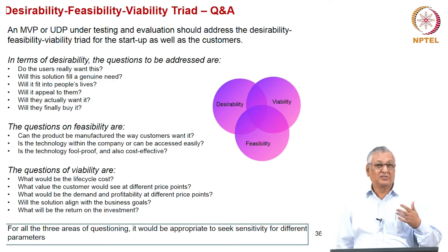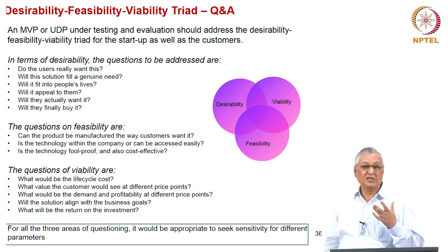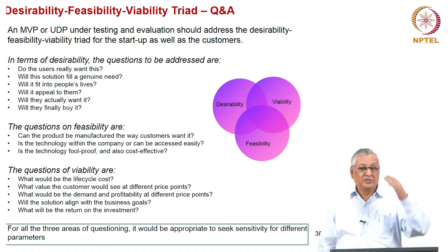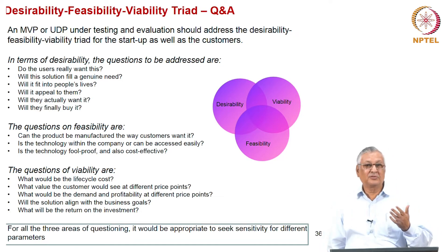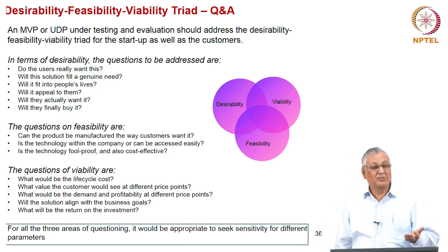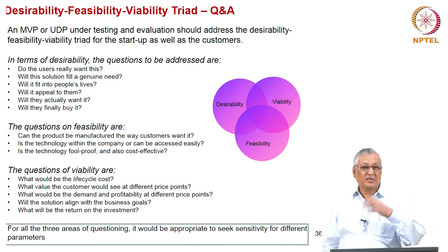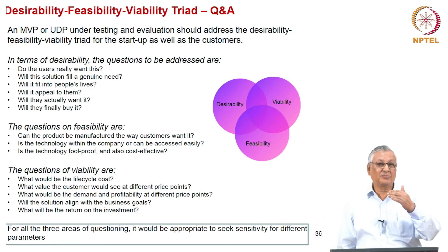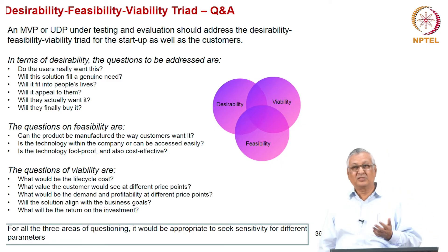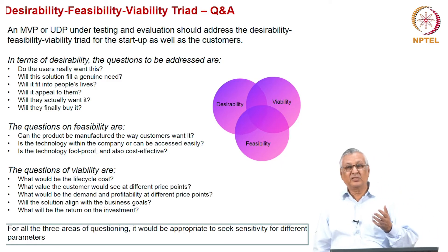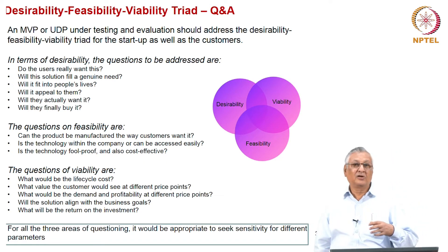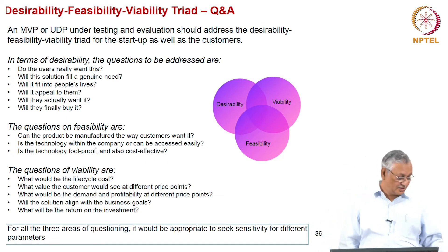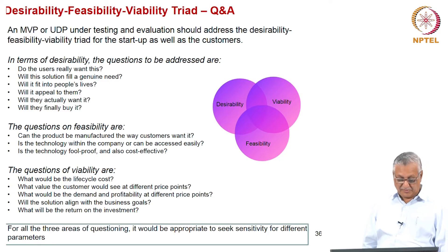Some companies take the risk to scale up first, reduce cost, and then make it more attractive to the customer. Other companies get customer acceptance first and then slowly ramp up. It depends on the pioneering or monopoly nature of the technology and the execution capabilities of the firm backed by funding capability. The key is to understand the sensitivity for each of these things.